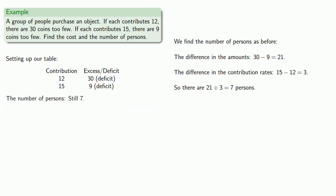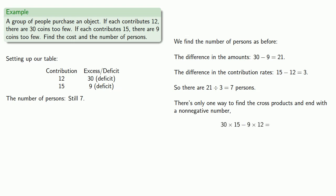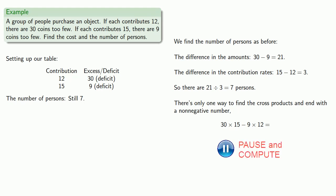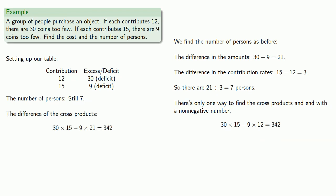Because both contribution rates produced a deficit, we take the difference of the cross products. There's only one way to do this and get a non-negative number: 30 times 15 minus 9 times 12, which gives 342. Dividing the difference in cross products by the difference in rates — 342 divided by 3 — gives 114, which is the cost.